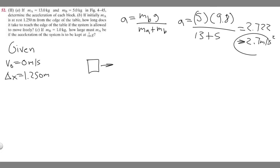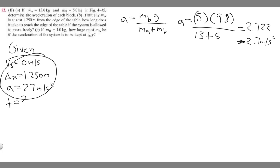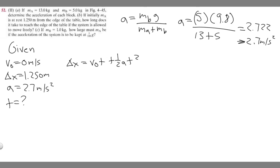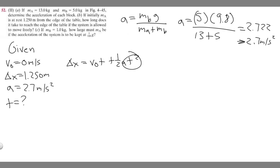We also know the acceleration of the block — that's exactly what we just solved for: a equals 2.7 meters per second squared. They're asking how long, so we're solving for t. The equation we're going to use is delta x equals v sub zero times t plus one half a t squared. We're given delta x, v sub zero, and we solved for a, so we just need to plug in and solve for t.